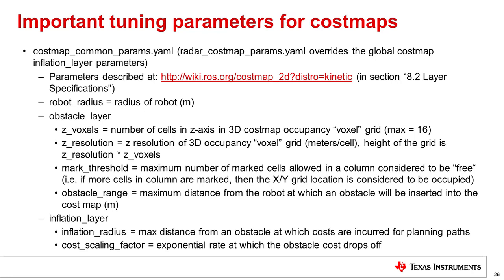Obstacle range is the maximum distance from the robot at which an obstacle will be inserted into the cost map in meters. There is also a concept of an inflation layer in Robot OS, which is the distance around an object that the robot will attempt to avoid going into. The inflation radius is the maximum distance from an obstacle at which costs are incurred for planning paths. The cost scaling factor is the exponential rate at which the obstacle cost drops off as you go away from an obstacle. Both of these parameters will affect the path planning of the robot and determine how close or aggressively it gets around obstacles.